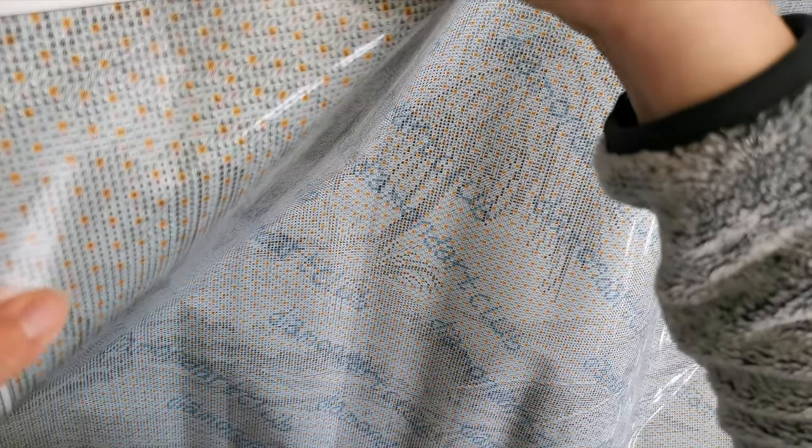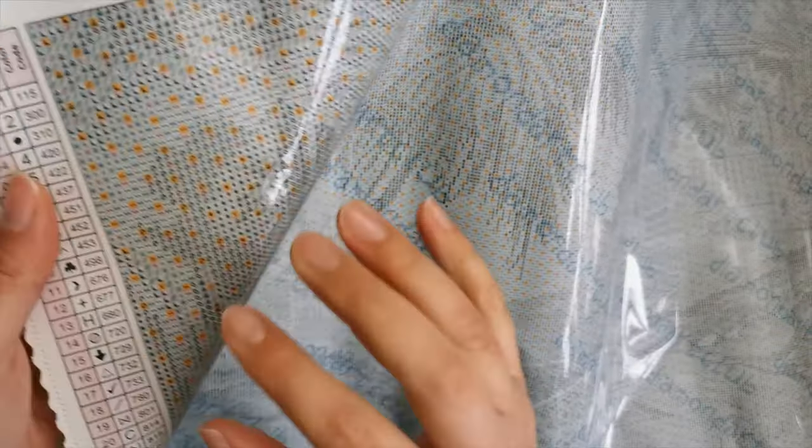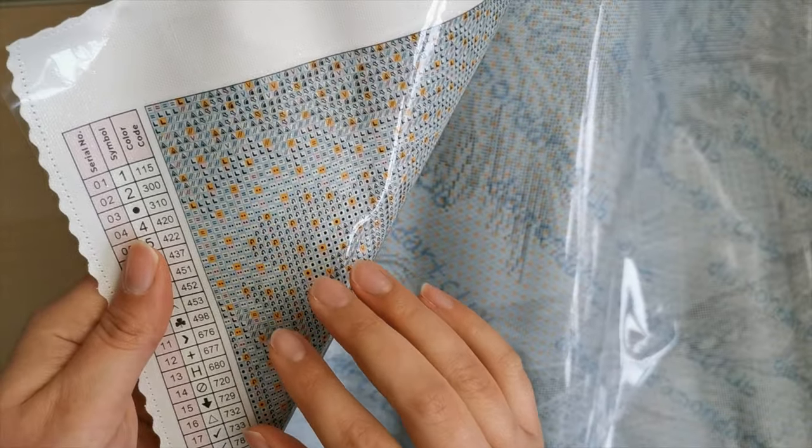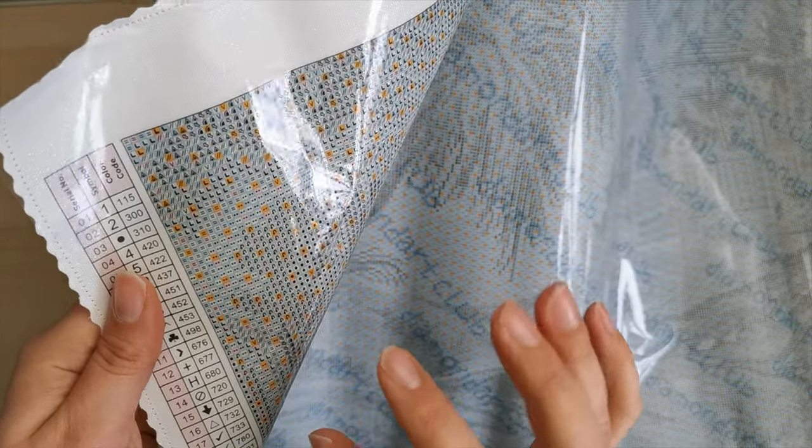This does come with the perforated plastic that comes with the new Diamond Art Club kits so that you can make easy sections. But for canvases like this, I highly recommend that you make very small sections. Alrighty, so let's go ahead and look at the diamonds. I want to see what those specialty drills look like.